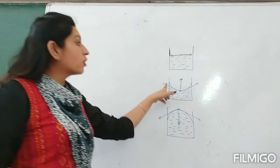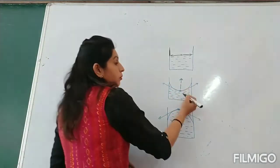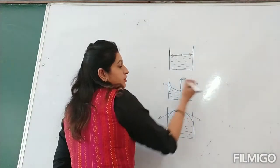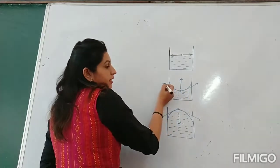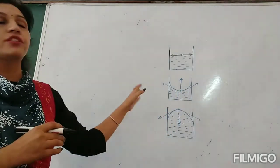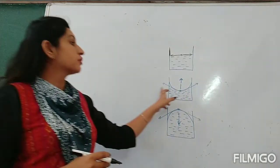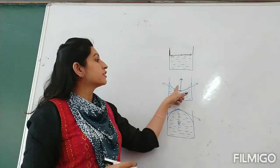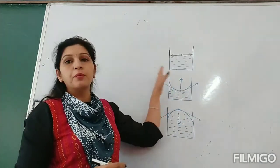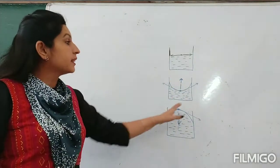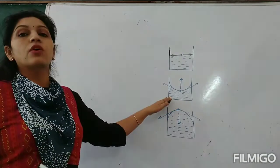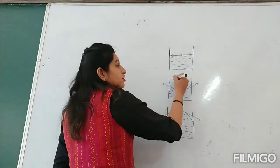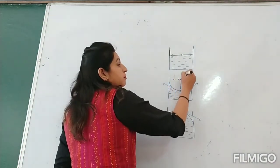For the concave meniscus, when we draw the tangents — one tangent here and one tangent here — these tangents represent the force of surface tension. The resultant force of surface tension will be in the upward direction.